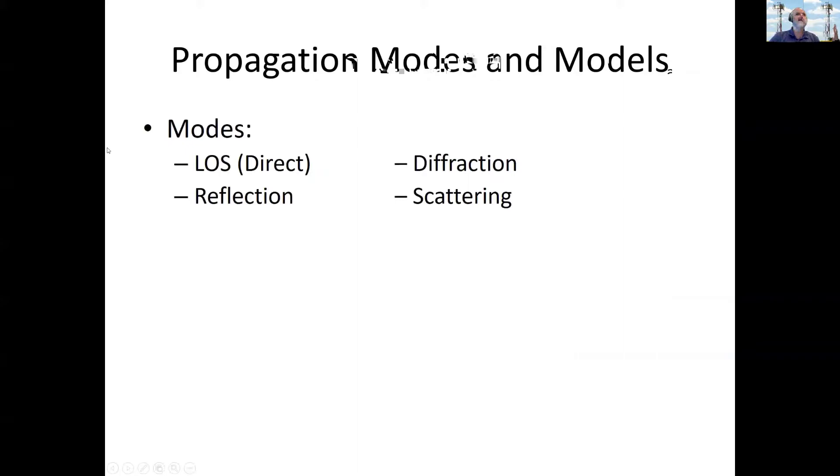So putting this together, we now have four modes of propagation that we talked about, line of sight, reflection, diffraction, and scattering. And with this, we can create models. And this is what's done in RF engineering, is you come up with good models for how your signals are going to propagate, and you base your design of your cellular systems on these models.